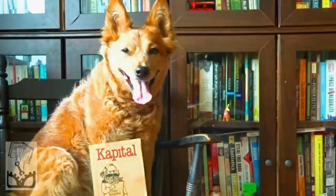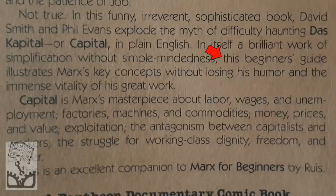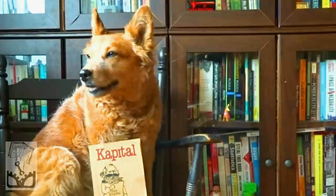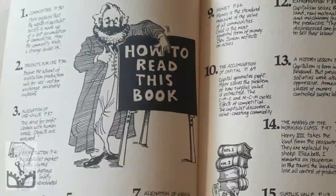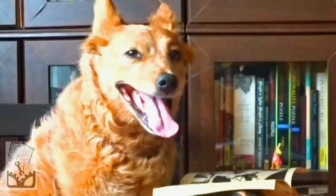The key idea of this text is written right on the back of the book, where it states: 'This beginner's guide illustrates Marx's key concepts without losing his humor and the immense vitality of his great work.' Awesome, I like that. Let's not waste any more time and take a look at this text in depth. To start, we have a 'how to read this book' section, which summarizes every chapter and basically does my job for me — so don't look at this part, it will expose my laziness.